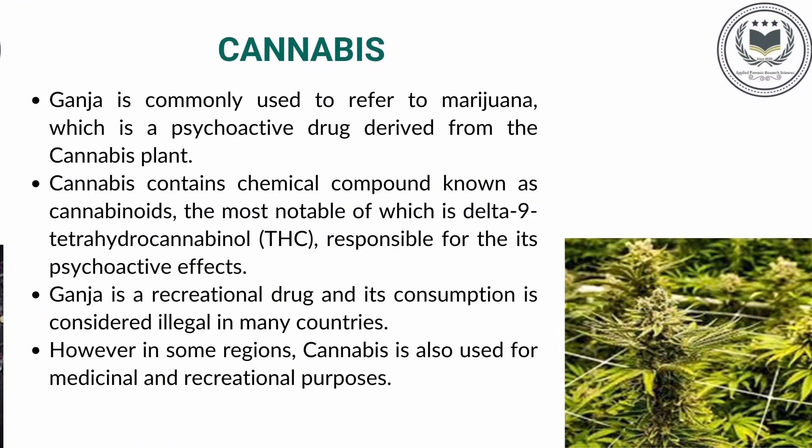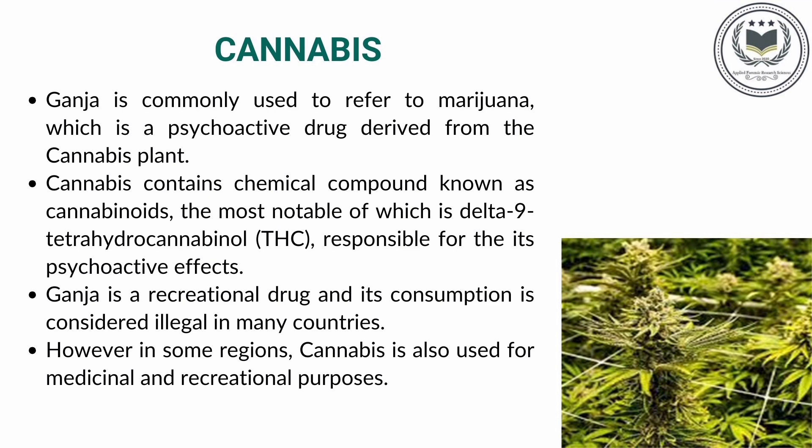Cannabinoids act on receptors in the brain and produce effects like relaxation, altered perception, and mood changes in the consumer. Cannabinoids are also called ganja or marijuana in local language. It is extracted from the cannabis plant. Cannabis contains cannabinoids, which are chemical compounds, and its major proportion has THC, which is mainly responsible for its psychotropic effects.